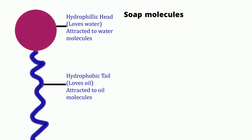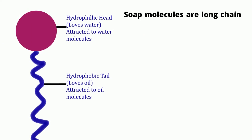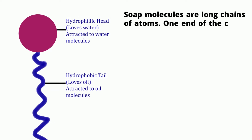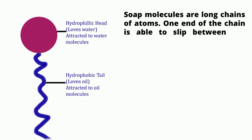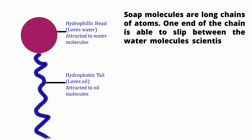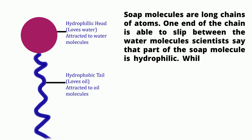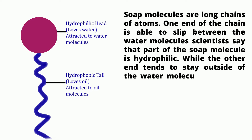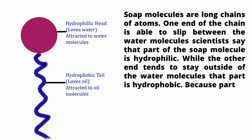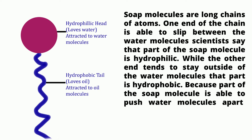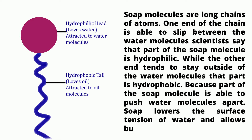Soap molecules are long chains of atoms. One end of the chain is able to slip between the water molecules — scientists say that part of the soap molecule is hydrophilic. While the other end tends to stay outside of the water molecules — that part is hydrophobic. Because part of the soap molecule is able to push water molecules apart, soap lowers the surface tension of water and allows bubbles to form.